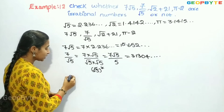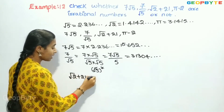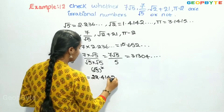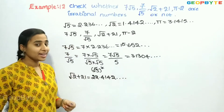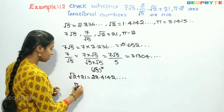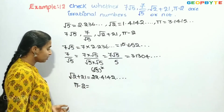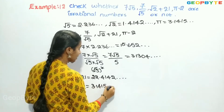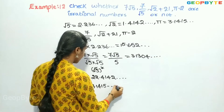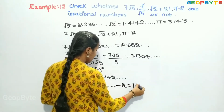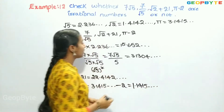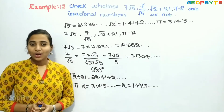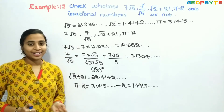For root 2 plus 21, the value is 22.4142.... For pi minus 2, pi is 3.1415..., so the result continues as a decimal. If we observe, all these answers are non-terminating, non-recurring numbers. So all of them are irrational numbers.